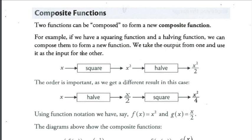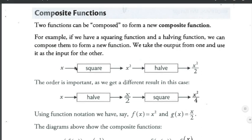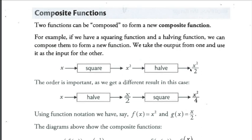Let's have a look at another example. If we have a squaring function and a halving function, we can compose them to form a new function. We take the output from one and use it as the input for the other. So we start off with X or just any number we could take.